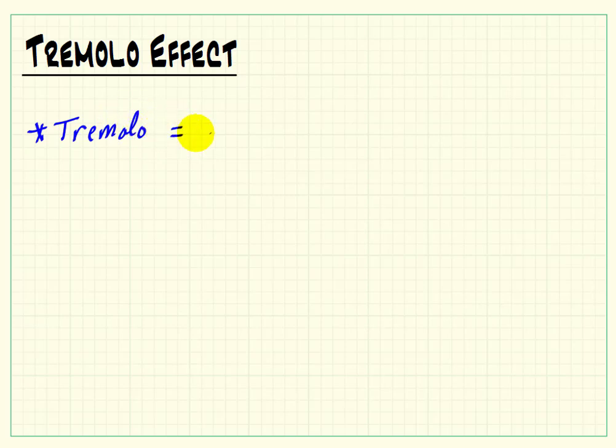To begin, the tremolo effect is a type of low-frequency amplitude modulation, or we could say this is the same thing as low-frequency AM.